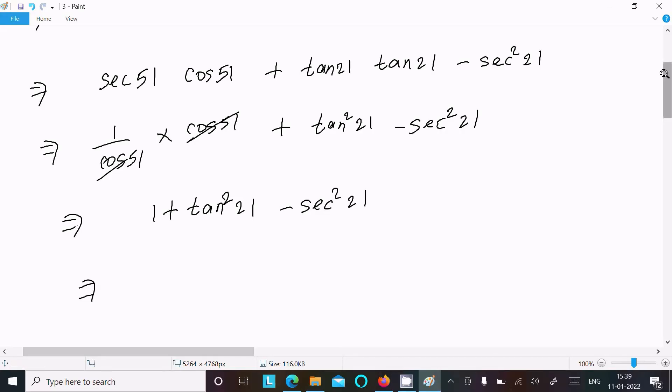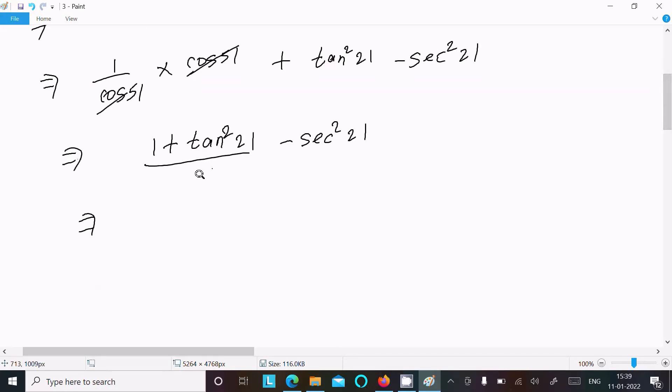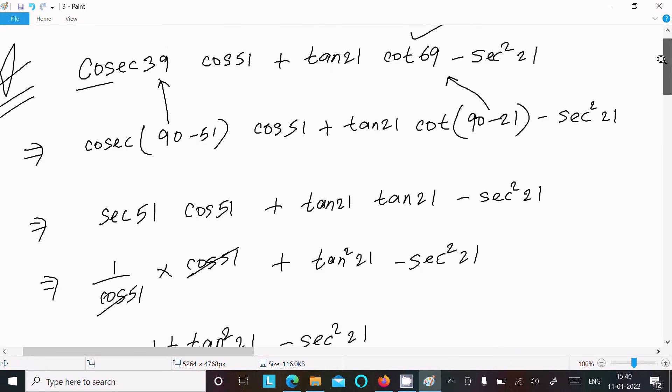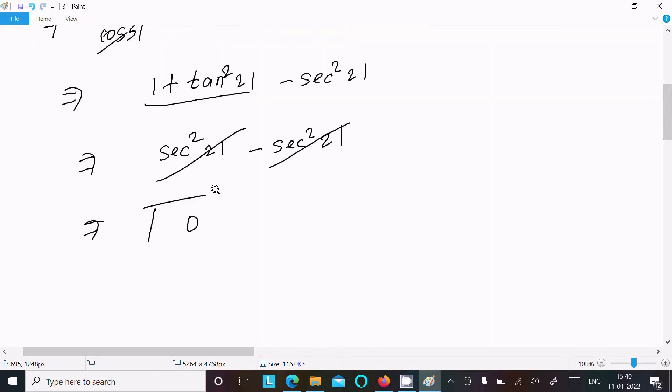Now 1 + tan² 21°, at this place we can write sec² 21°, and here sec² 21°. So this has opposite signs, it equals 0. So the answer to this question is 0.